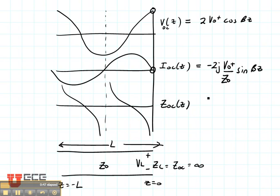Now what about ZOC? It's equal to minus jZ0 times the cotangent of beta L. And that's what's shown right here.